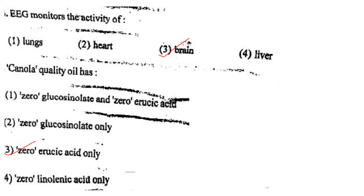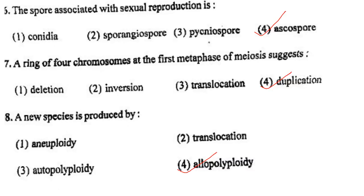Next one: Canola quality oil has option 1, 0% glucosinolate and 0% erucic acid; option 2, 0% glucosinolate only; option 3, 0% erucic acid only; option 4, 0% linoleic acid only. Answer is option 3: 0% erucic acid only.